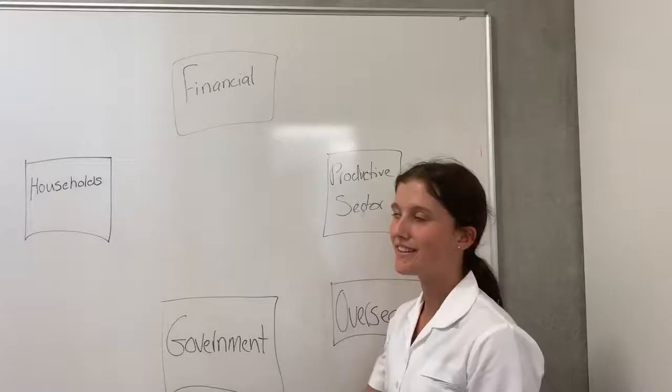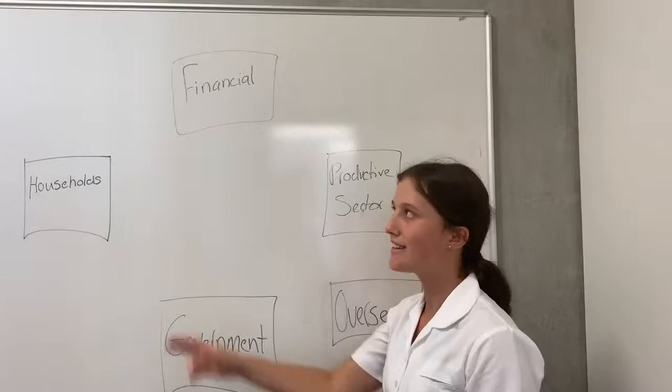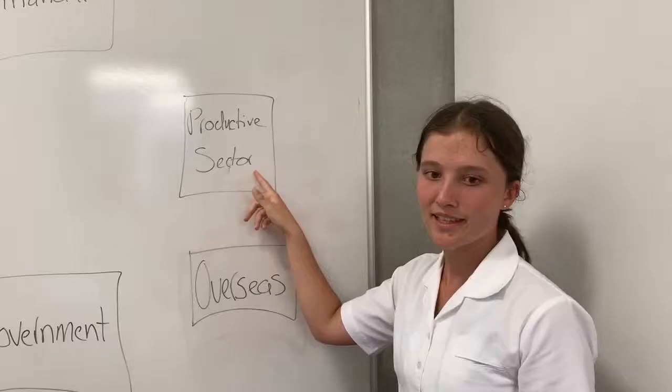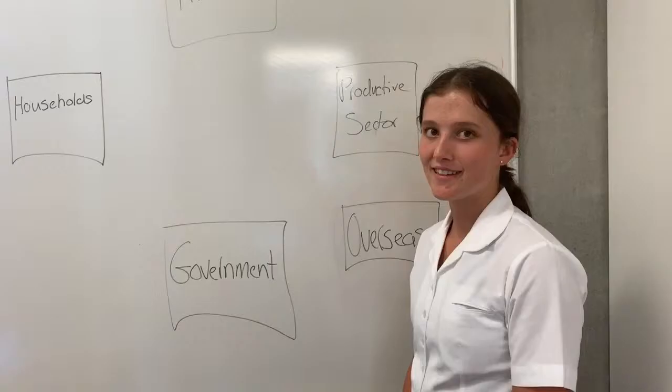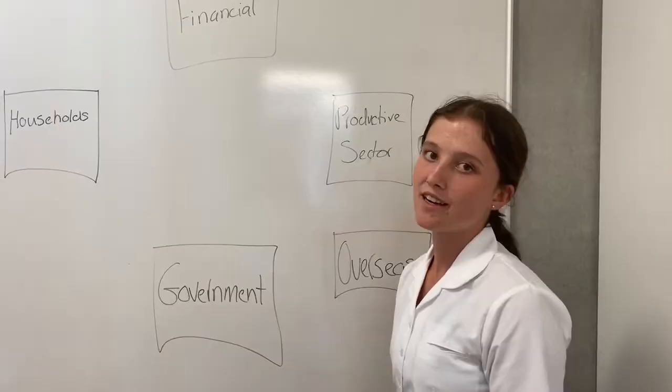Financial institutions provide banking services, collecting savings deposits from households and channeling the funds to the firms for investment. The firms are involved in the production of goods and services. We send exports to the overseas trade sector that they demand, and the overseas trade sector imports goods and services that we need. The central government receives funds from taxation and spends these funds on providing the public with goods and services. The households represent the consumers in the economy.